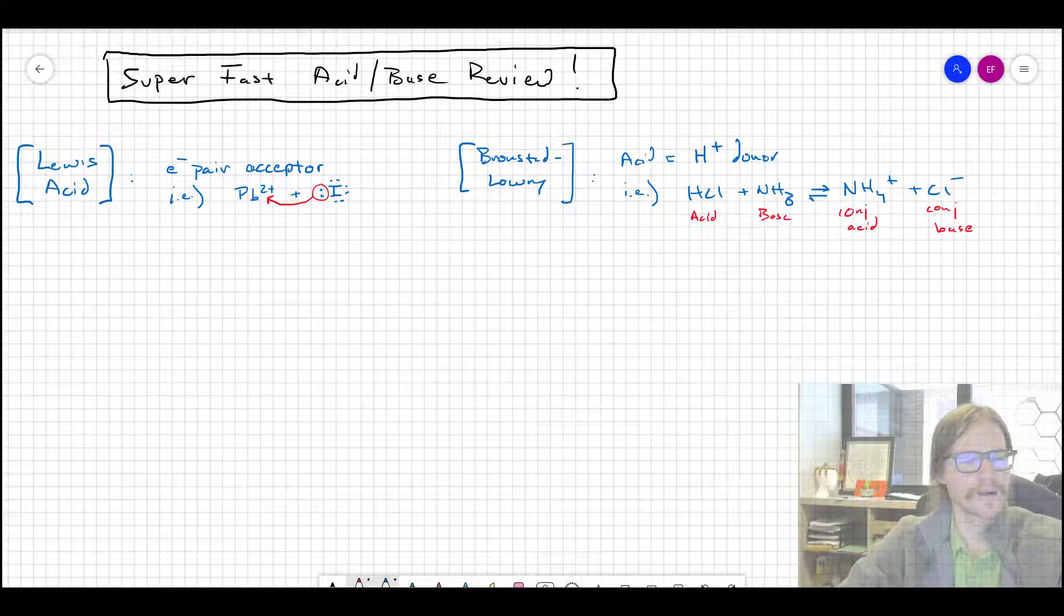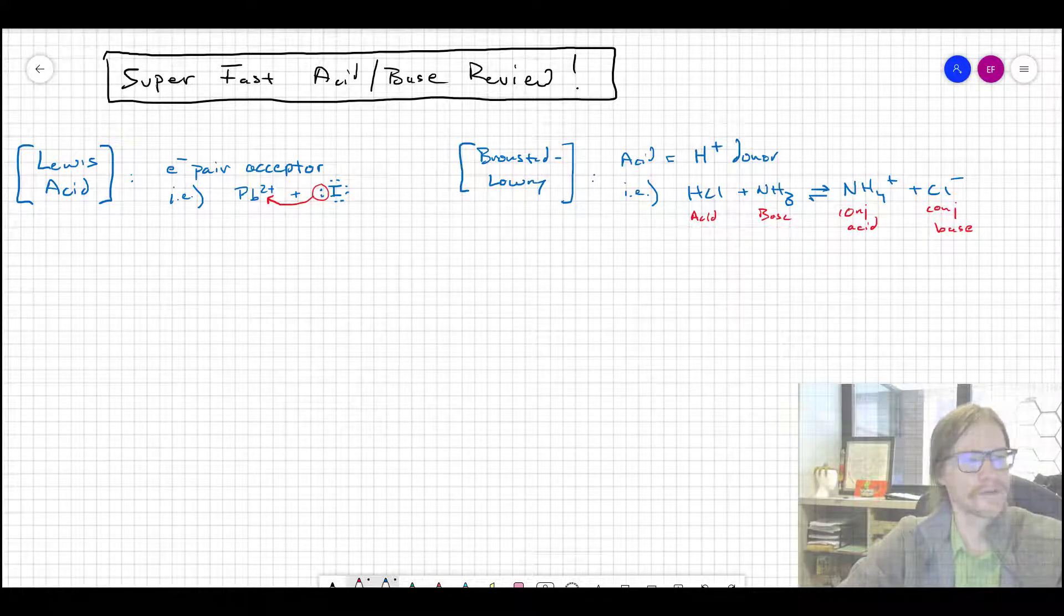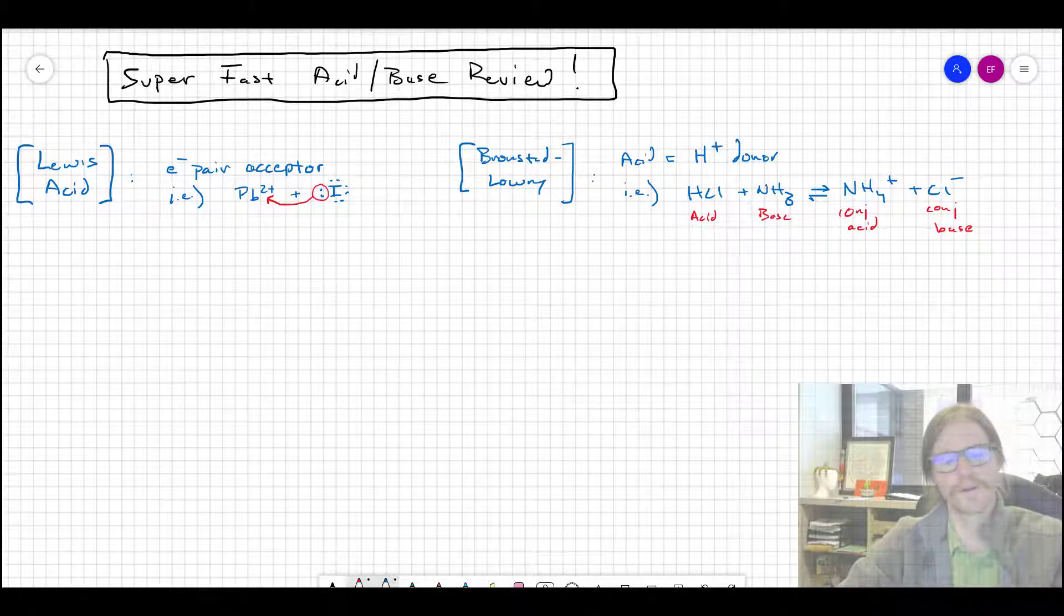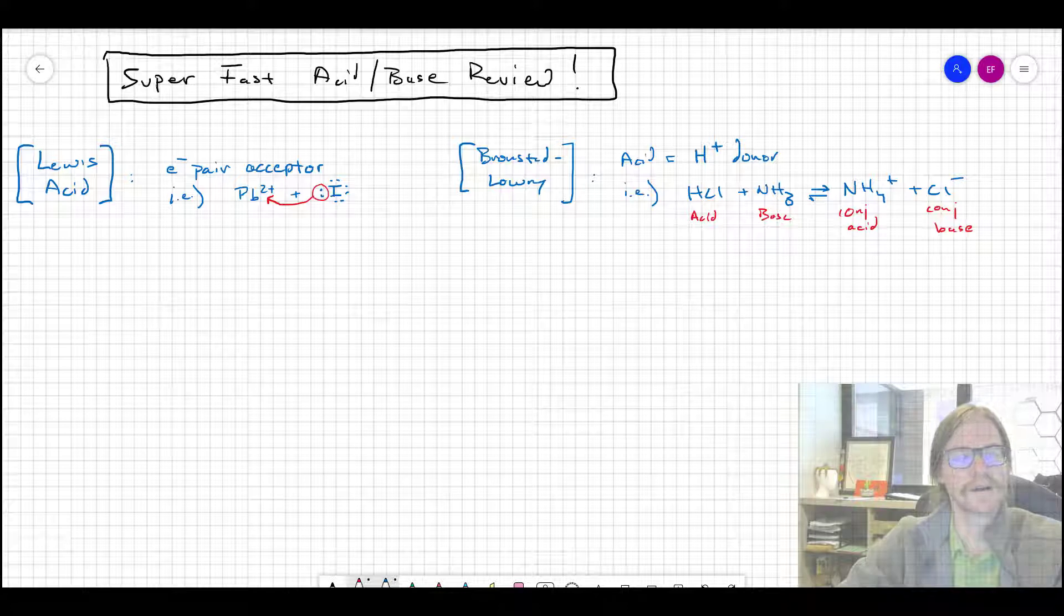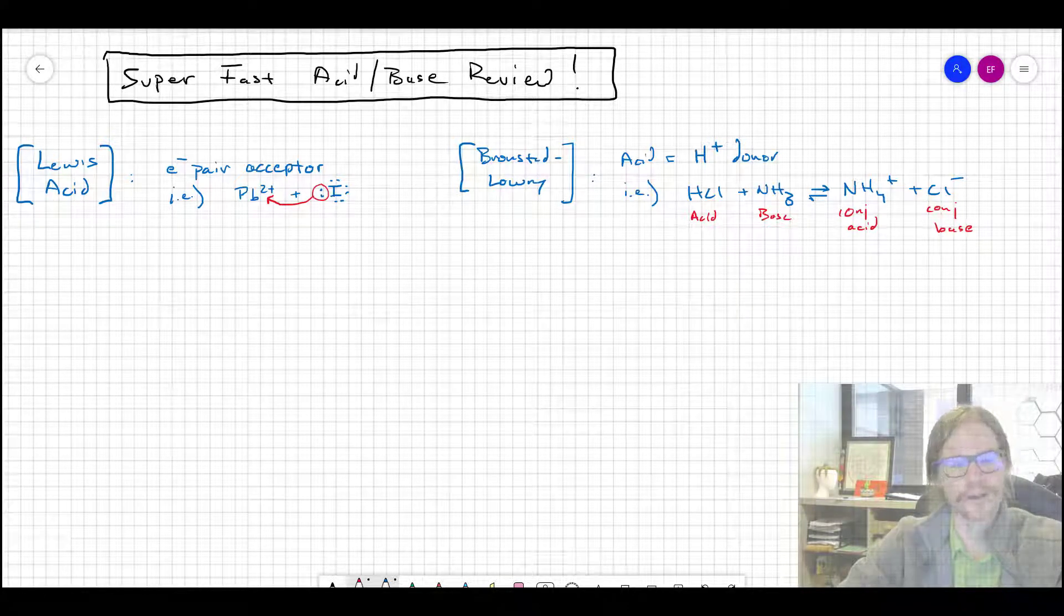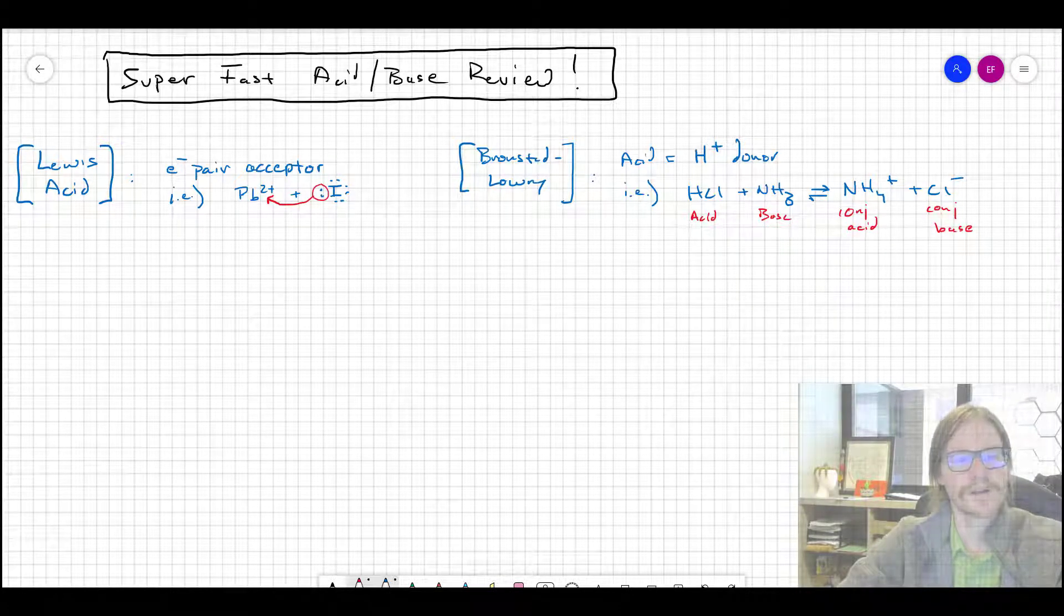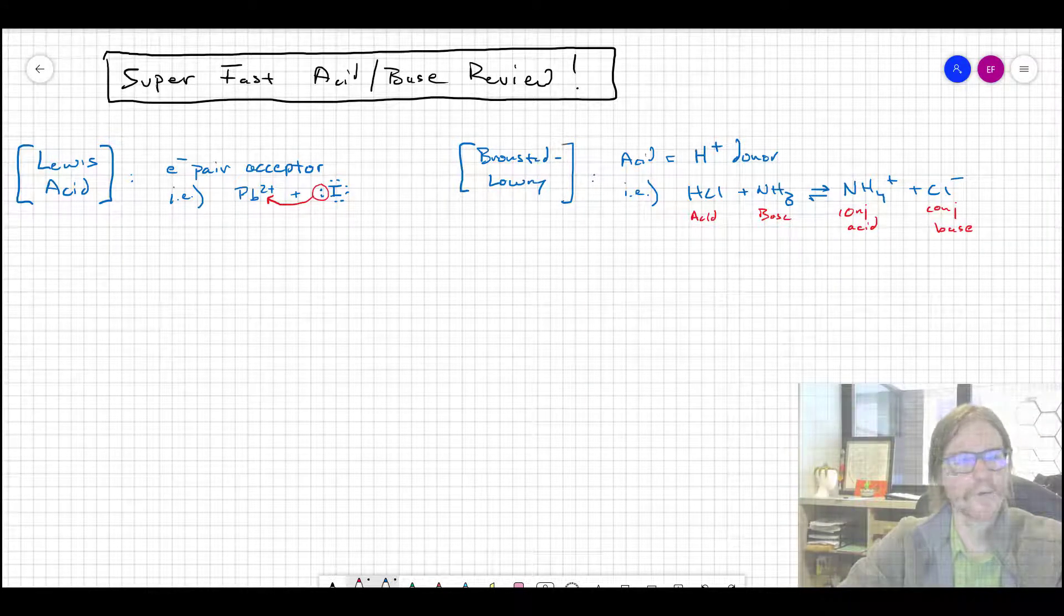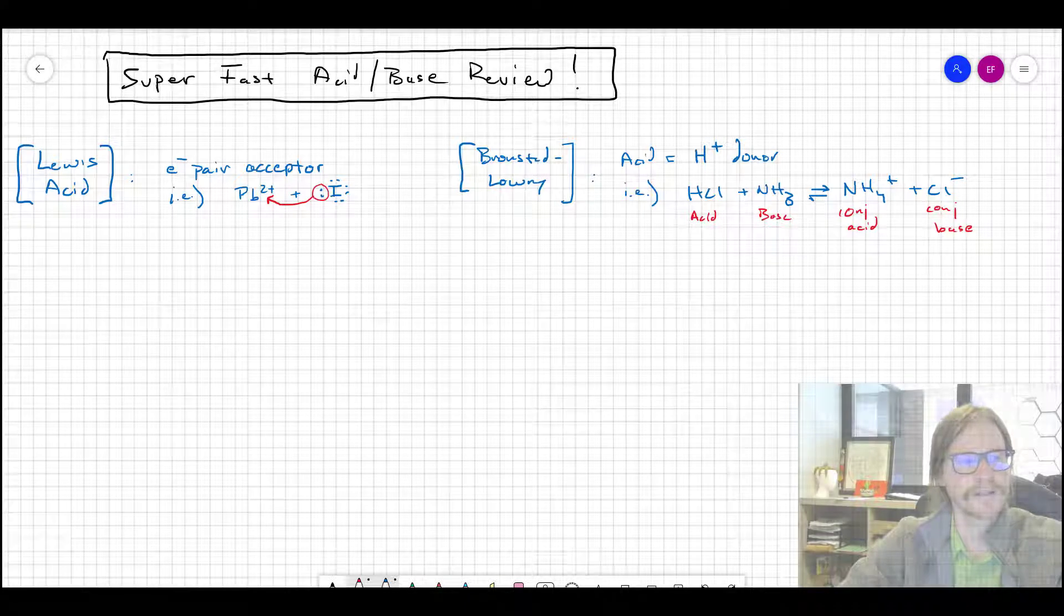Two big categories of acids and bases are Lewis acids - electron pair acceptors. We just talked about that in a previous video. Metal ions are often acids based on their complexation. In the example, lead 2+ has things like iodide, bromide, or chloride. Those lone pairs on those negative ions can be added and complex with the metal ion.